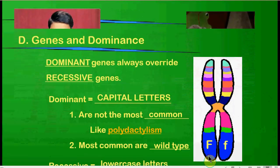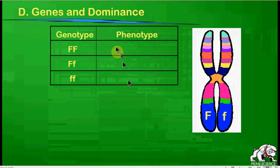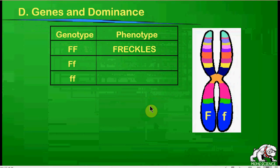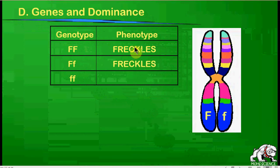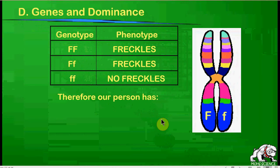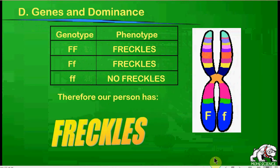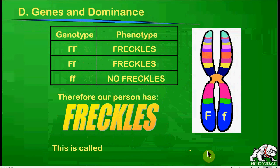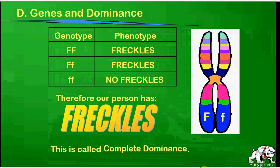How does that relate to whether someone has freckles or not? With the genotype capital F, capital F — two dominant traits — the phenotype is freckles, because the only option is freckles. With the genotype big F, little f, this person also has freckles, perhaps just as many, because the recessive trait is effectively turned off. Only with two lowercase f's do you get no freckles. So our person with capital F, lowercase f has freckles — this is complete dominance.